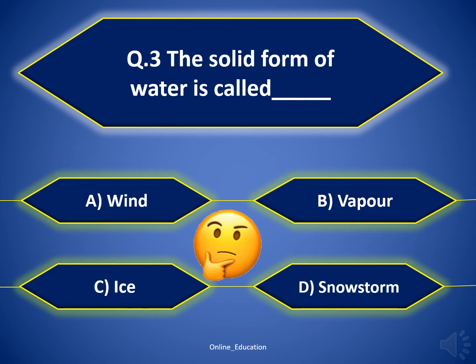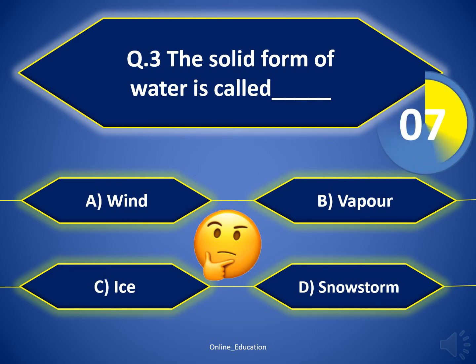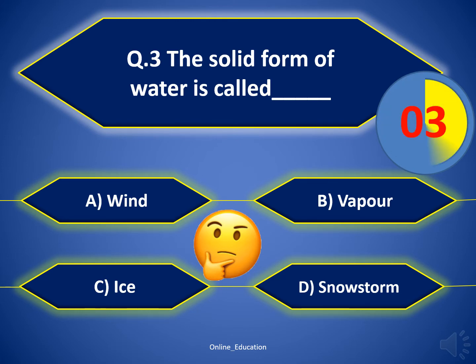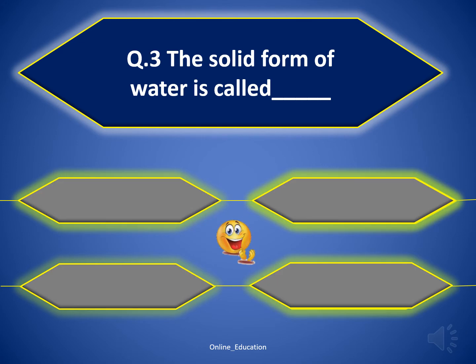Question 3. The solid form of water is called? The correct answer is Option C — Ice. Very good work!